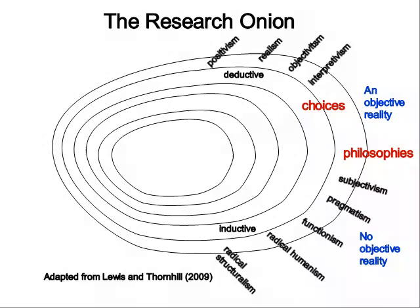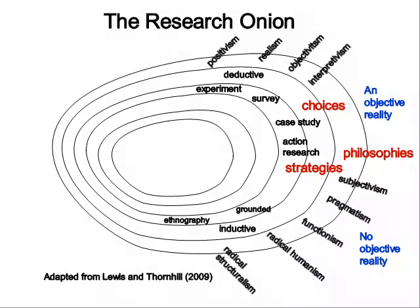The third layer from the outside of our research onion relates to the strategies we adopt, given our philosophical position and our choice of deductive or inductive approach. If we adopt a deductive approach, our strategies for understanding the phenomenon might be experimental, a survey involving rating scales or ranking items, or case studies. Moving to a more inductive approach, we are more likely to adopt research designs that involve action research, grounded approaches, or even ethnographic research, where we observe and become part of the community we wish to study.